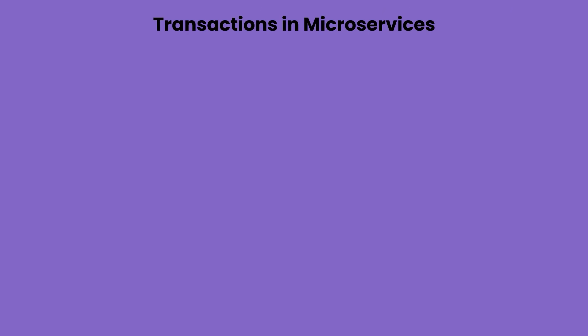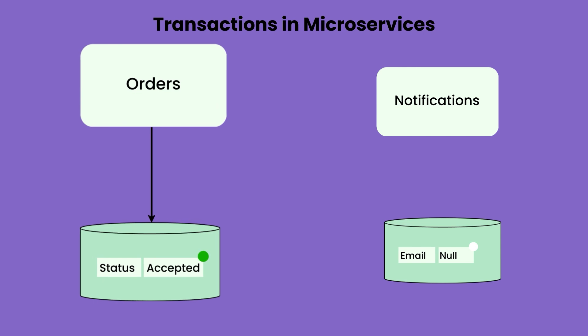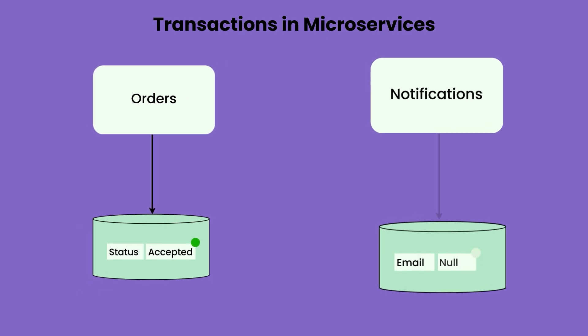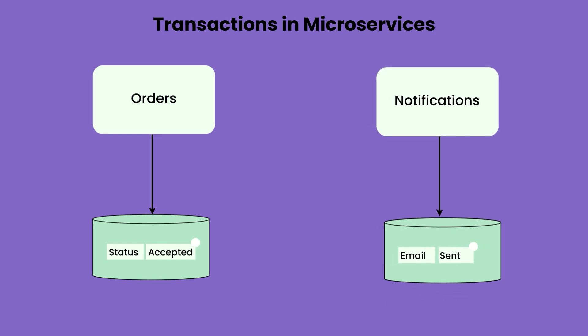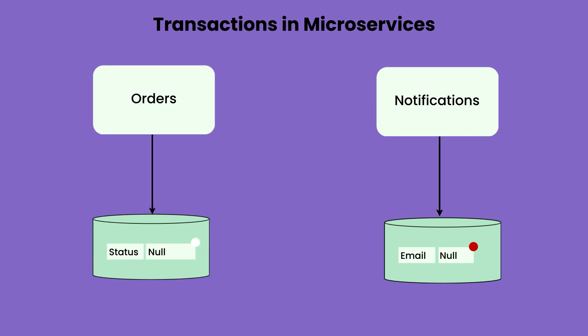What happens in the case of microservices? You have two different databases and two different services. Now you want to make sure that for one particular business logic, when you change the state in one DB and one table, you also have to change the state in the second DB and the second table. If one state is updated and the other is not, your transaction is not completed. Either you revert the first one or you make sure the second one happens.